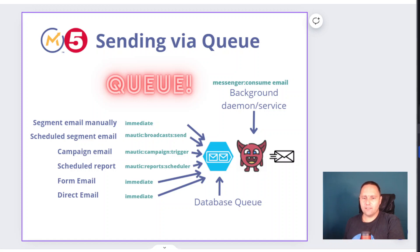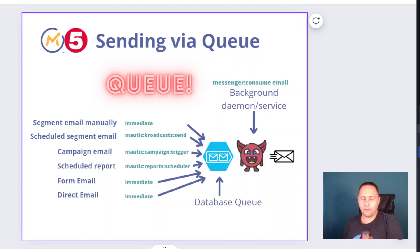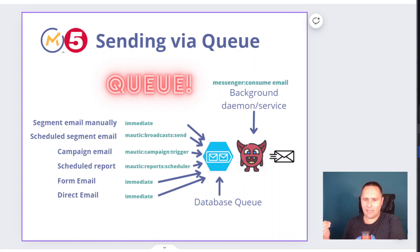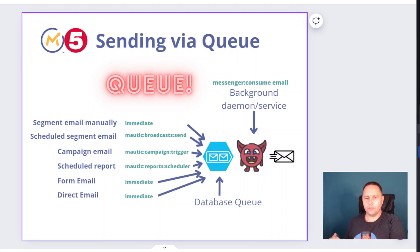All the different ways you can send email in Mautic will result in the email being pushed into a queue — and this is a database queue. That's the difference compared to Mautic 4, because in version 4 we used to have a file queue, where a bunch of files would be pushed into the var/spool folder. Now it's in the database, which makes it a lot faster.